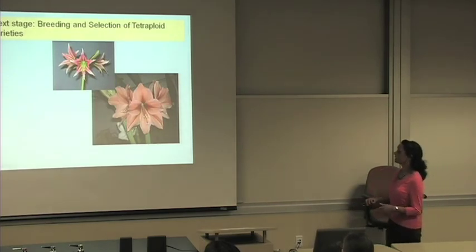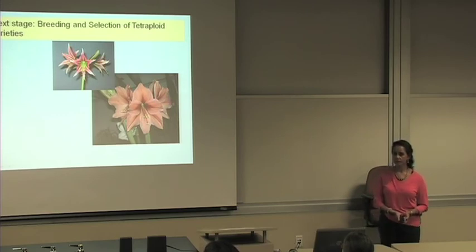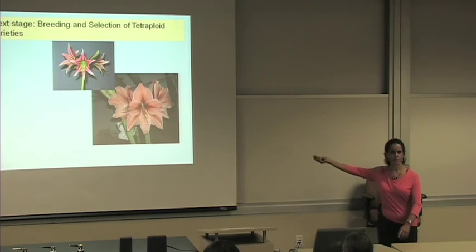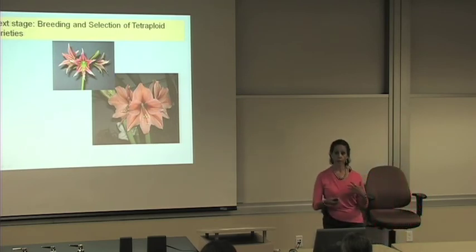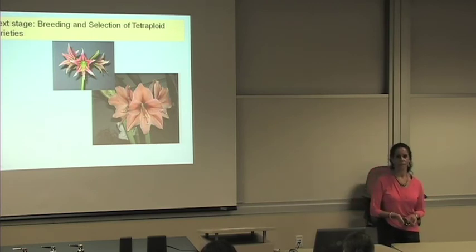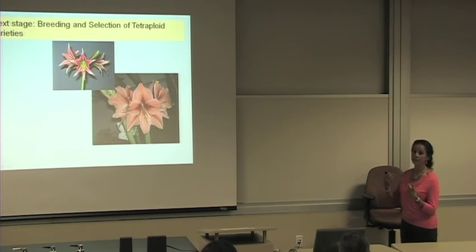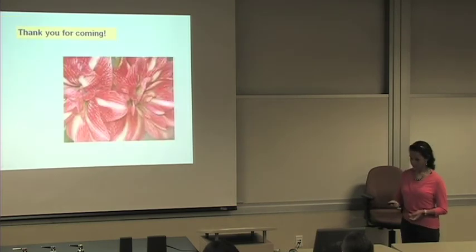And so the next stage then is going to be the breeding and selection of tetraploid varieties that will be done at the USDA. So as you see, with some knowledge of genetics, enthusiasm for your subject, like flowers in this case, we can come up with very interesting projects that will show us a lot of the principles that take place in plants or that plants follow to produce these new varieties. So that's it. Are there any additional questions?